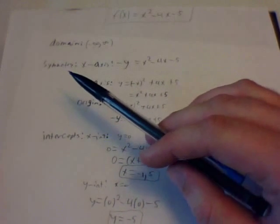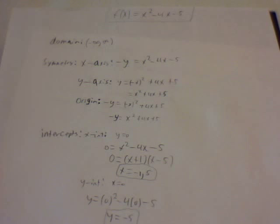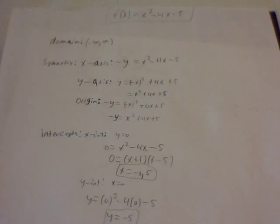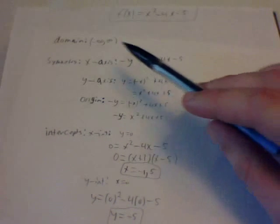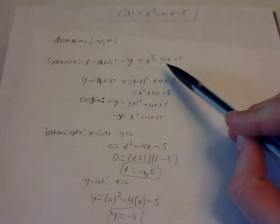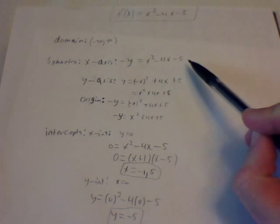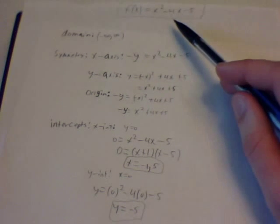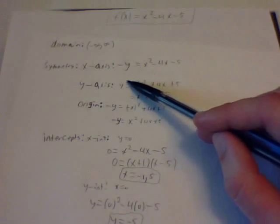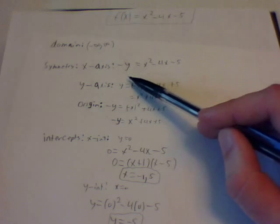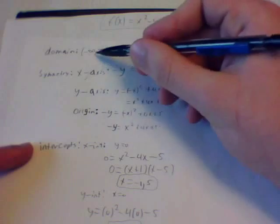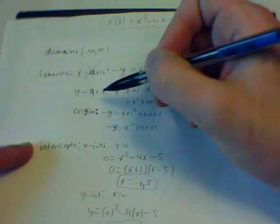Next we're going to look at the symmetry. For x-axis symmetry, we substitute in a negative for y, so we have negative y = x² - 4x - 5. We are trying to get back to the original equation. Since that's not going to work out, we cross that one out — there's no x-axis symmetry.